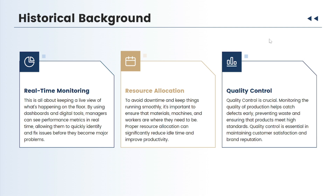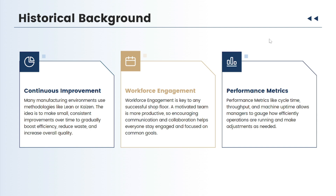Quality control is crucial. Monitoring the quality of production helps catch defects early, preventing waste and ensuring products meet high quality standards. Quality control is essential for maintaining customer satisfaction and brand reputation. Then there is continuous improvement — manufacturing environments use methodologies like Lean and Kaizen. The idea is to make small, consistent improvements over time to gradually boost efficiency, reduce waste, and increase overall quality.